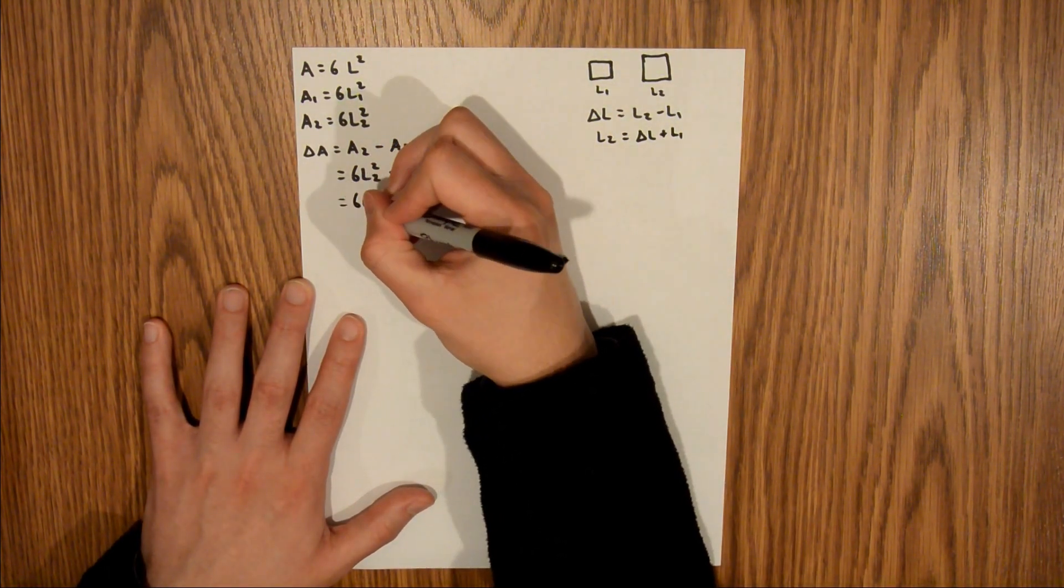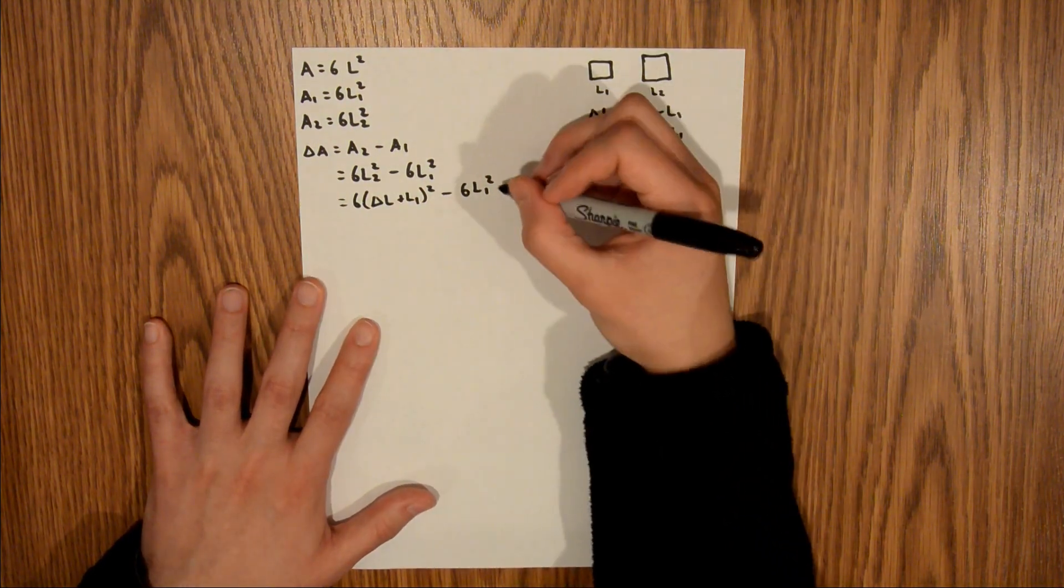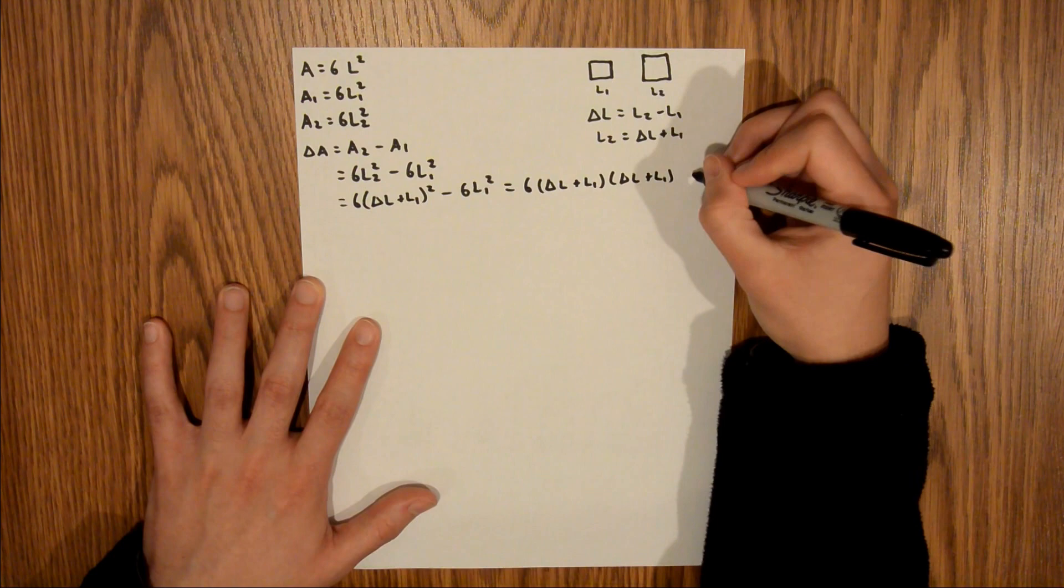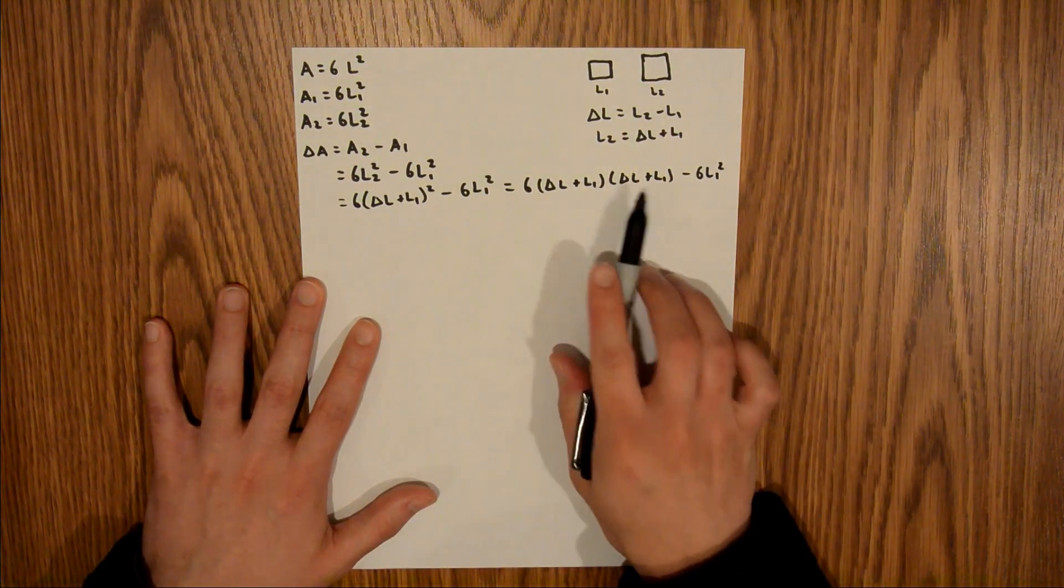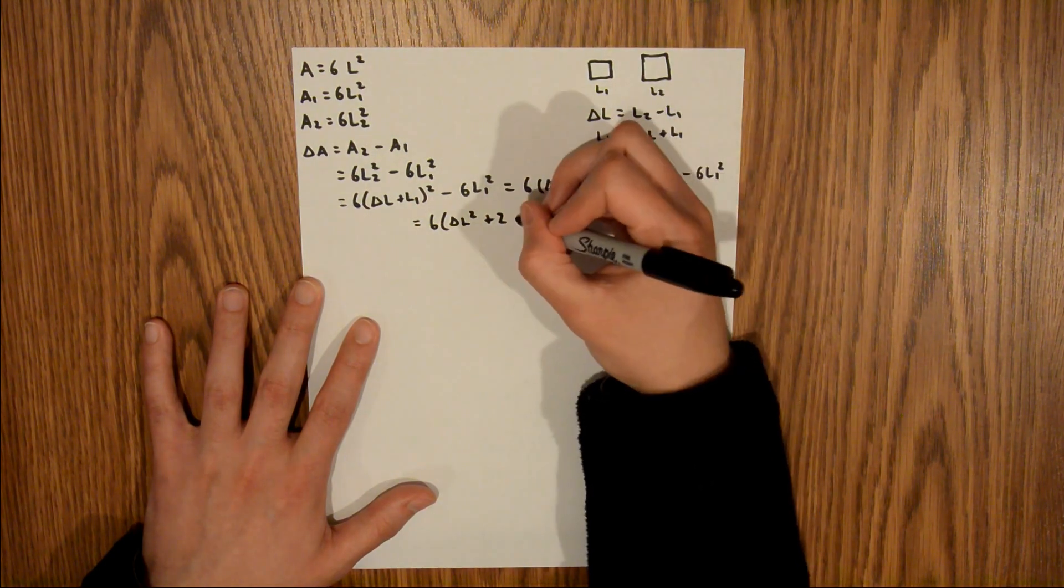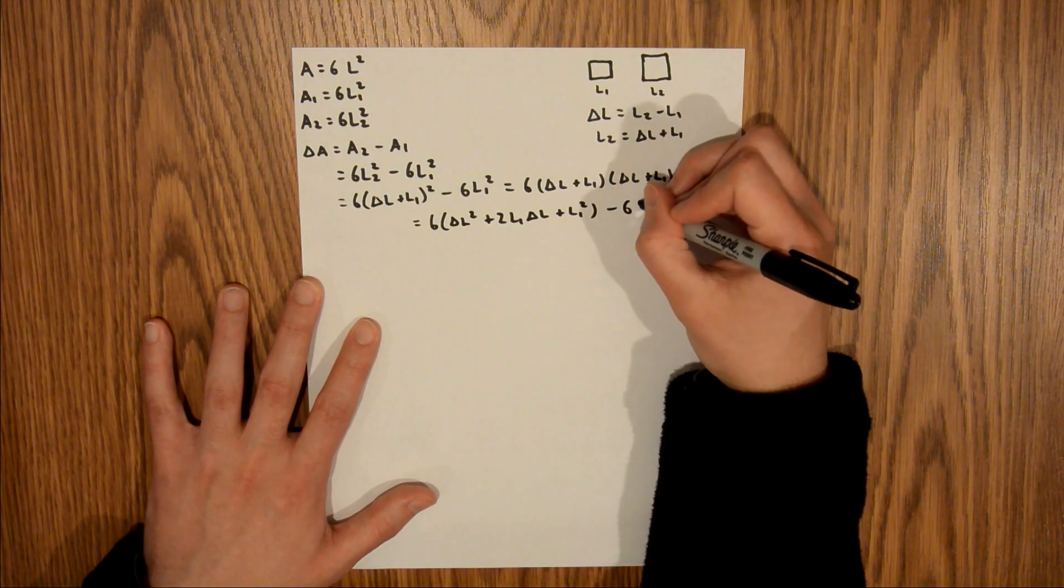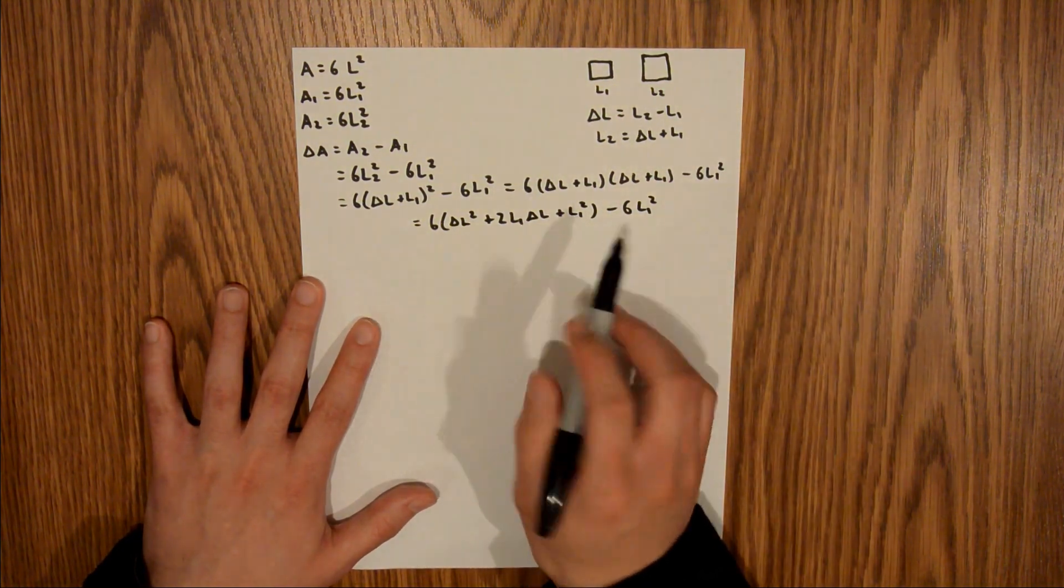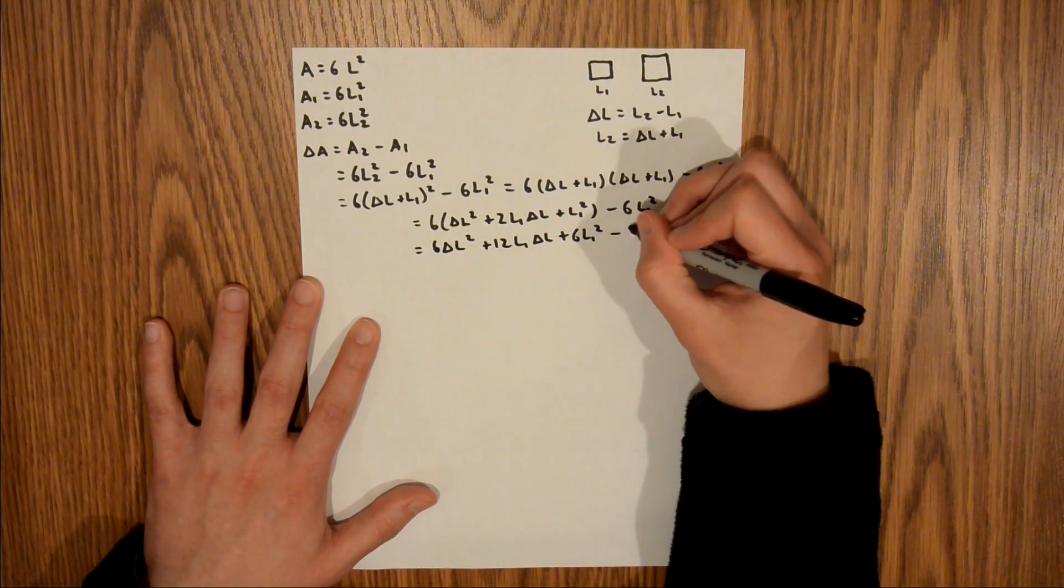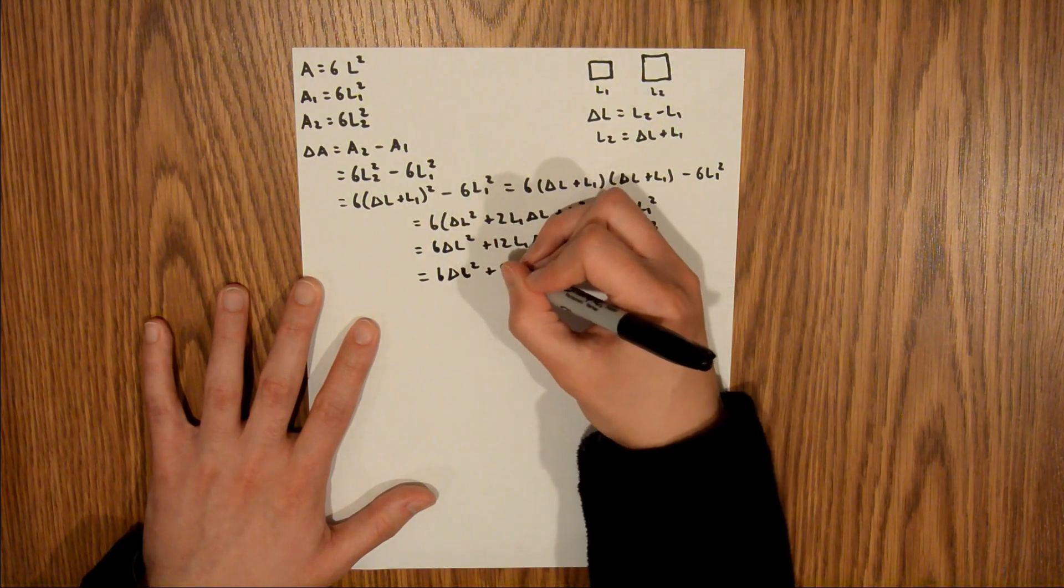That's going to give me 6 times delta L plus L1, entire quantity squared, minus 6L1 squared. Now I can expand this out: 6 times delta L plus L1, delta L plus L1, minus 6L1 squared. Multiplying these two out gives 6 times delta L squared plus 2 L1 delta L plus L1 squared, minus 6L1 squared. Distributing the 6 out: 6 delta L squared plus 12 L1 delta L plus 6L1 squared minus 6L1 squared. These two terms drop out, and we're left with 6 delta L squared plus 12 L1 delta L.